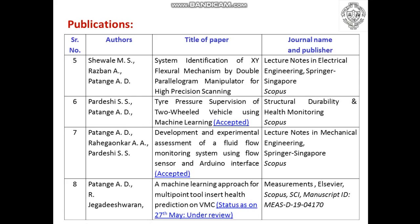The fifth publication is about development of a mechanism for high-precision scanning: system identification of an XY flexural mechanism by double parallelogram manipulator. It includes a flexural mechanism — part of compliant mechanisms — where there are no separate joints like a traditional four-bar mechanism. Instead, it is a monolithic mechanism made of a single structure where joints are made of flexible materials or flexures that permit motion between two links. Published in Lecture Notes in Electrical Engineering by Springer, indexed by Scopus.